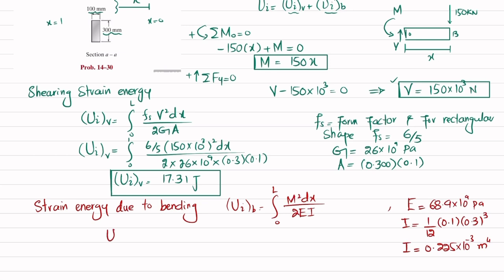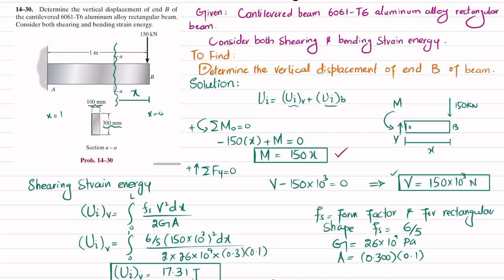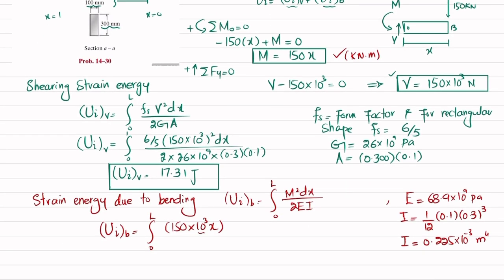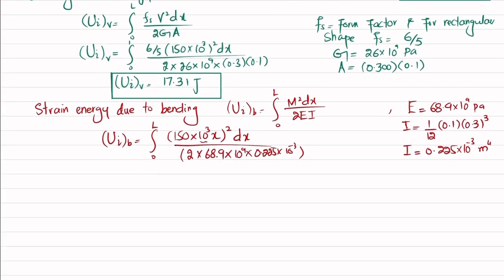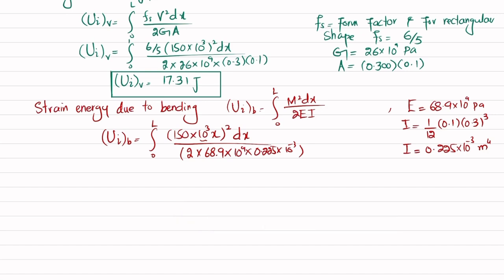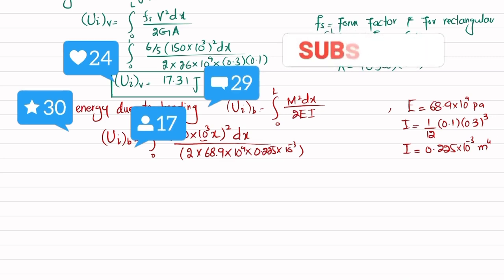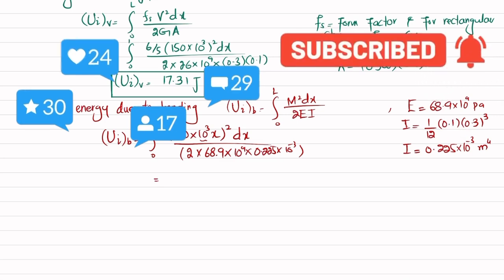Substituting into the bending strain energy formula: U_bending = integral from 0 to 1 of (150×10³ × x)² dx divided by (2 × 68.9×10⁹ × 0.225×10⁻³). The moment M = 150×10³ x is in newton-meters. Taking all constants outside the integral, we get a factor of 725.689 times the integral of x² dx from 0 to 1.